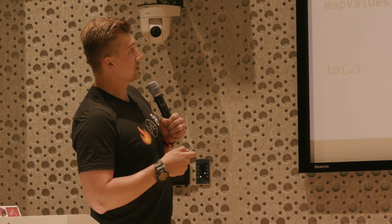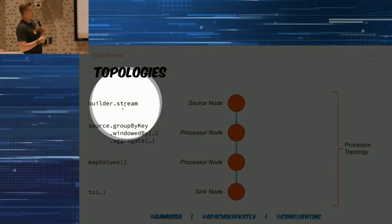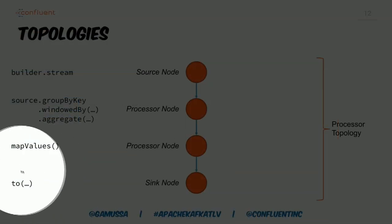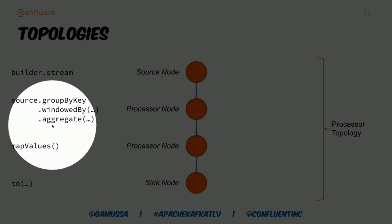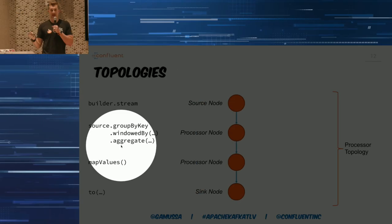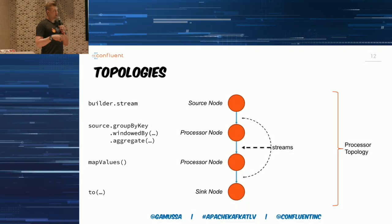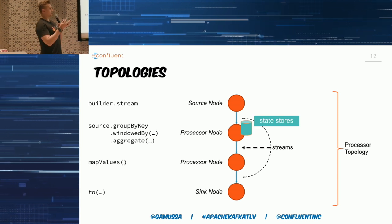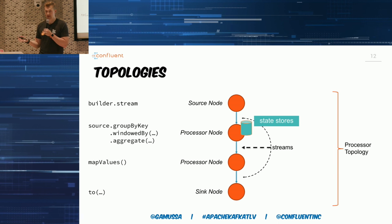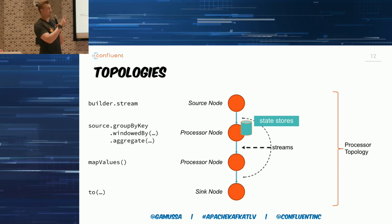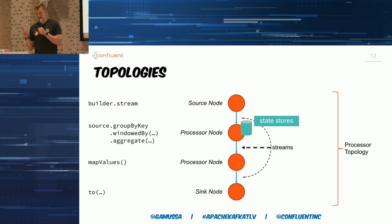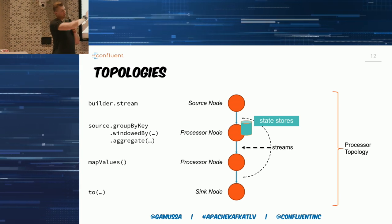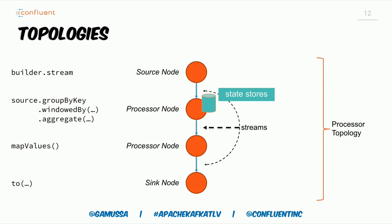We start with the source and get a stream from our streams builder. After that, we're saving into other topics, giving us a sync node. As you can see, we have two elements here: an element of stateful stream processing because we do aggregation, and an element of stateless stream processing. In order to serve both stateful and stateless processing, Kafka Streams creates a state store that holds all the aggregated and accumulated information.